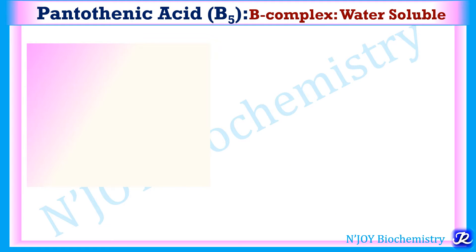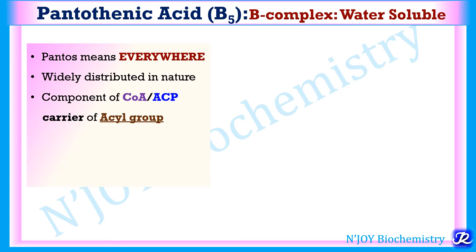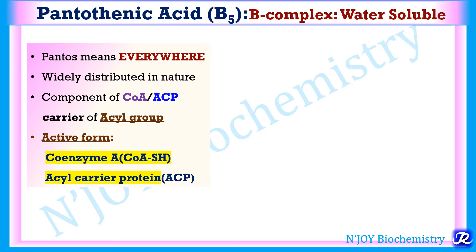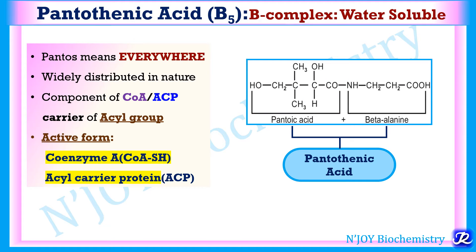Pantothenic acid is a B complex water soluble vitamin. 'Pantos' means everywhere, and this pantothenic acid is widely distributed in nature — that's why it is called pantothenic acid, present everywhere. It is the component of coenzyme A and acyl carrier protein, which carries the acyl group. The active forms of pantothenic acid are coenzyme A and acyl carrier protein. Pantothenic acid consists of pantoic acid and beta-alanine.